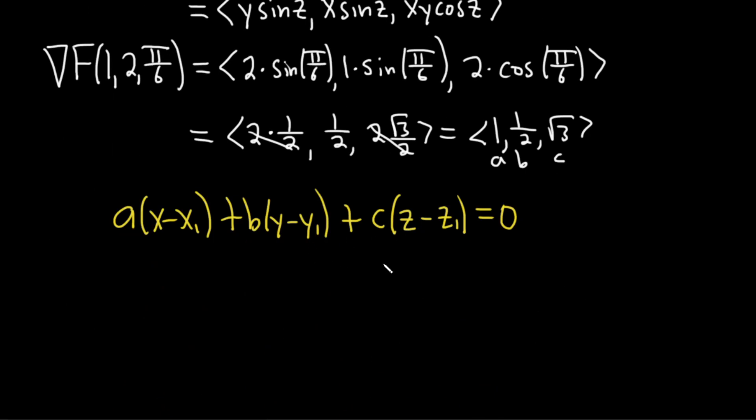It's a step that oftentimes people forget to do. And our point, I have lost it. Oh, it's right here. That's our x1, y1, and z1. So it'll be a, which is 1, times x minus 1. This is x1, y1, and z1. Plus b, which is 1 half, times y minus 2. Plus c, which is square root of 3, times z minus pi over 6. And that's equal to 0.